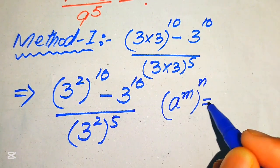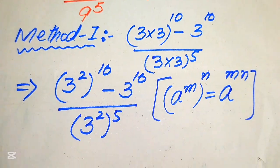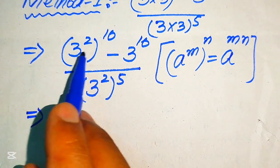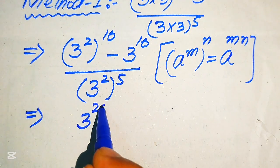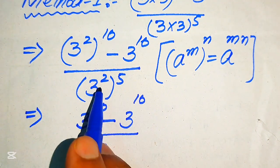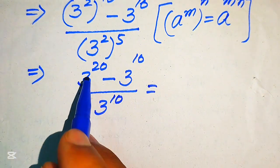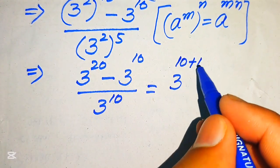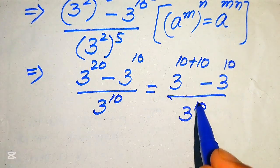We apply the exponent law: if you have a to the power of m to the power of n, it equals a to the power of m times n. According to this law, we multiply the two exponents: 3 to the power of 2 times 10 becomes 3 to the power of 20, minus 3 to the power of 10, divided by 3 to the power of 10. We then break 3 to the power of 20 as 3 to the power of 10 plus 10.